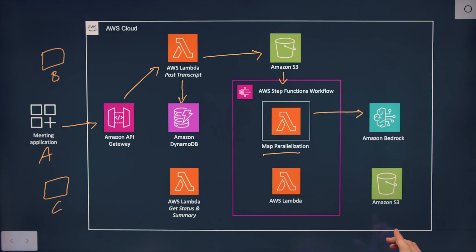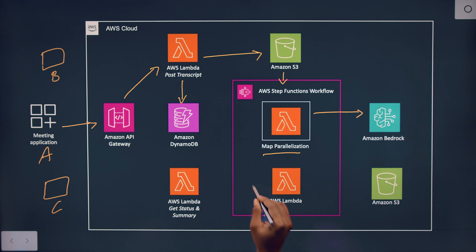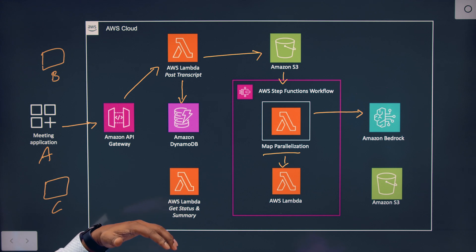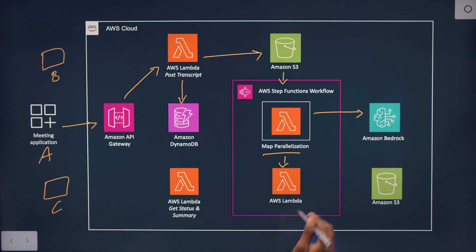You have this S3 bucket here and a Lambda — can you tell me more about these pieces? After we summarize each agenda item, we use this Lambda to aggregate all the summaries. We produce one summarization document and store it into the S3 bucket. That's what the customer ultimately gets back — that aggregated summary in this bucket.